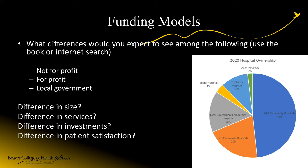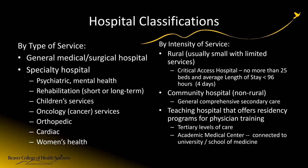We also have to think about the different factors that affect hospital operations: the size of the hospital, the services offered, how much capital funding investment is required, and how that translates to patient experience and satisfaction. When we talk about hospital classifications, a lot of times we're talking about a general acute care hospital — what your text refers to as a general medical surgical hospital. But there are also specialty hospitals.